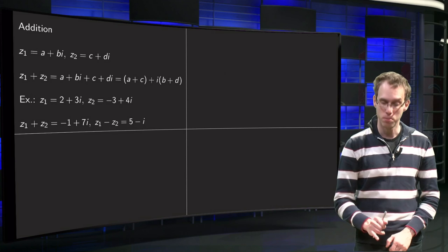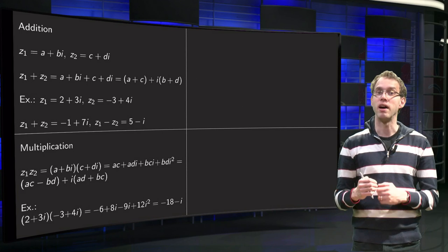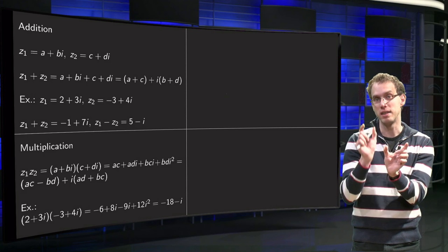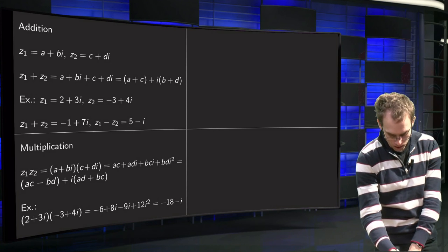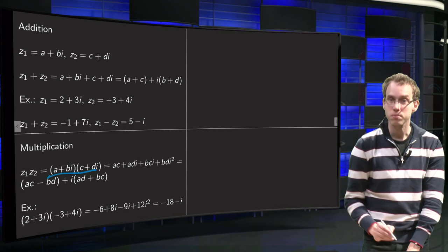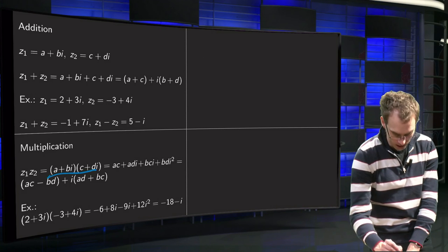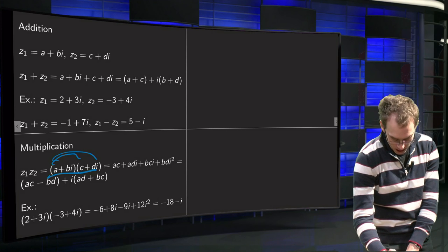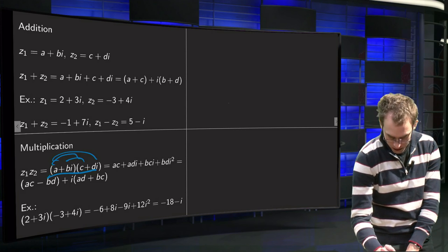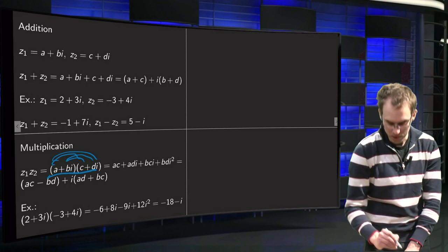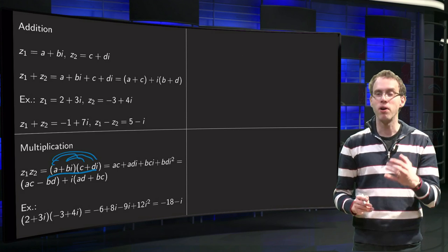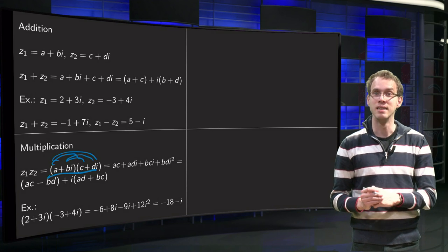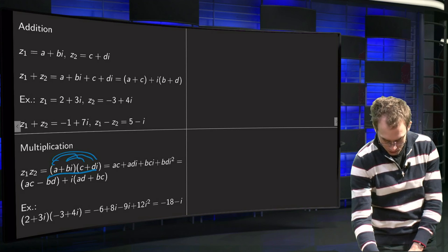What about multiplication? So if we multiply two complex numbers, we just write them as (a + bi)(c + di). And then we work out the bracket. We get ac and adi and bci and bdi². And at this point, this is the only point where we use the definition of i. i squared equals -1.